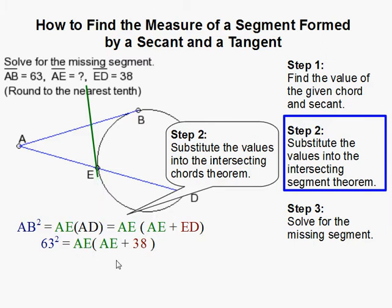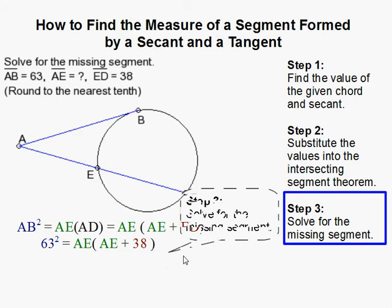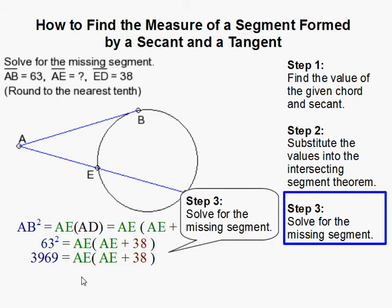Now we solve. 63 squared is 3969. In this step I distributed AE times AE and AE times 38. Then if you move everything over to the left, you get a quadratic equation.